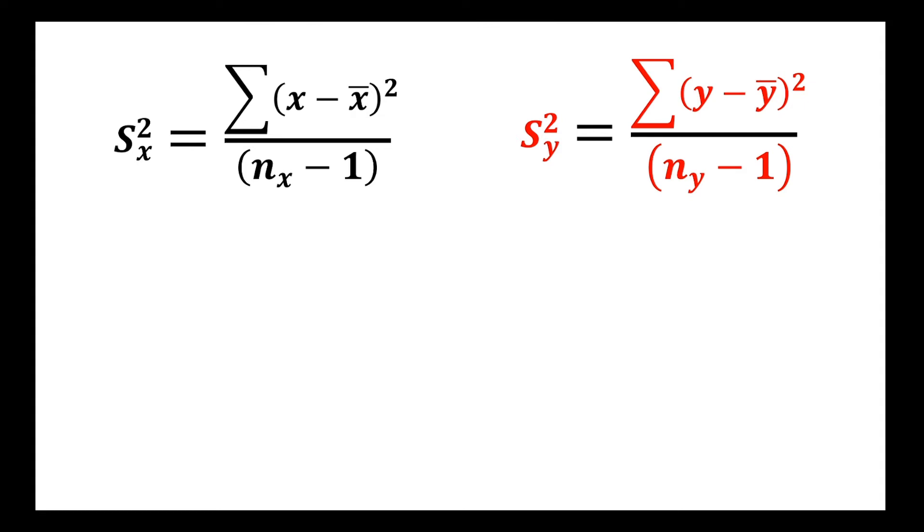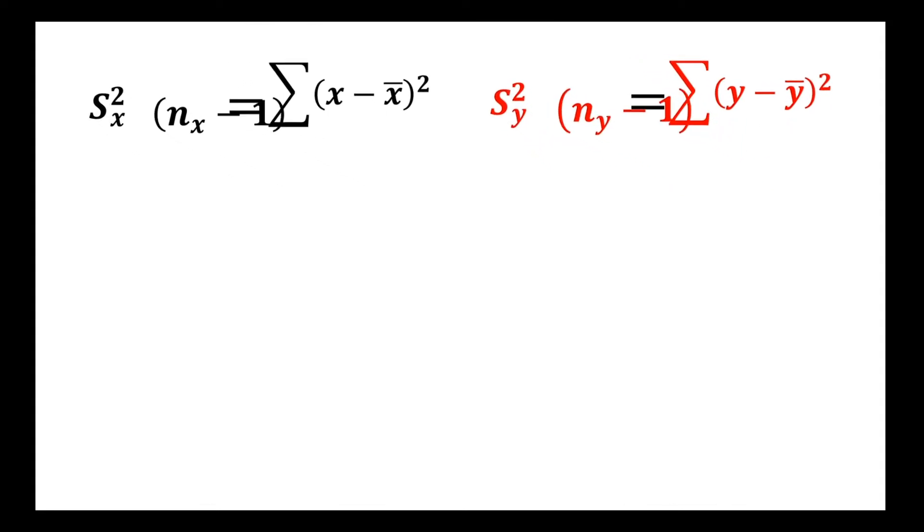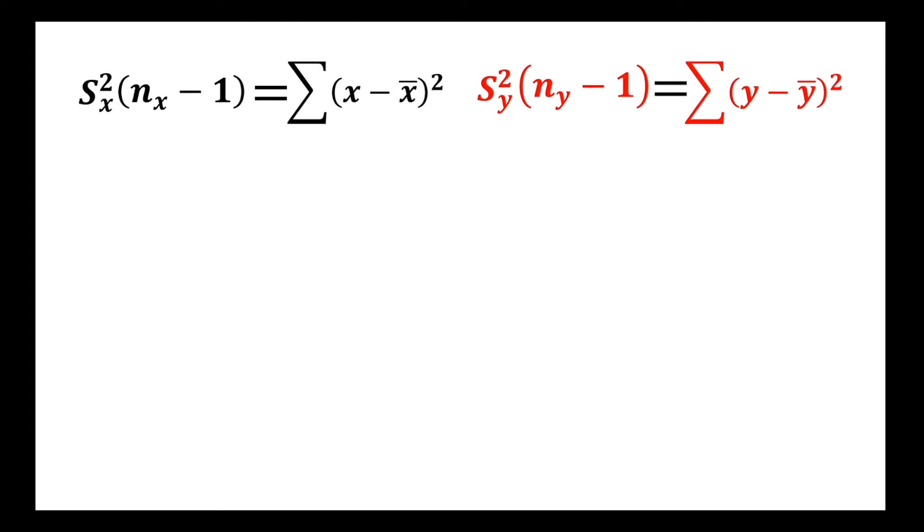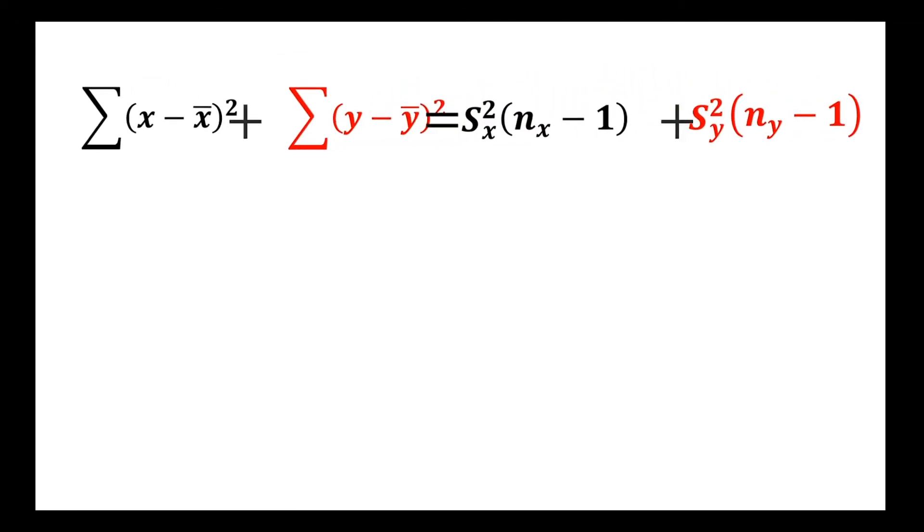So instead of estimating two variances separately, we're actually going to pool it together to estimate one variance, put all the data that we have into one calculation. We'll start by making the sum of the differences squared the subject. We can do that by multiplying across by n minus one. Let's find the total or the sum of the squares of the differences for each of the samples, so we'll add these together on the left hand side and this is the expression that we have on the right hand side.